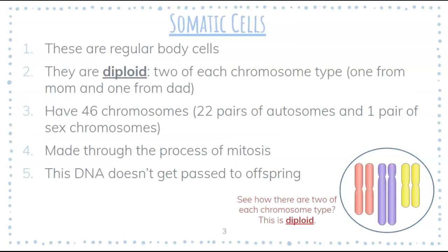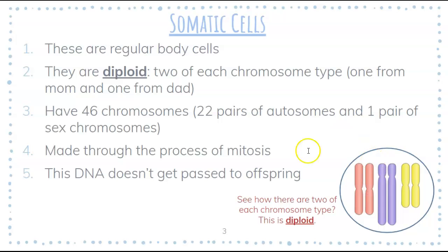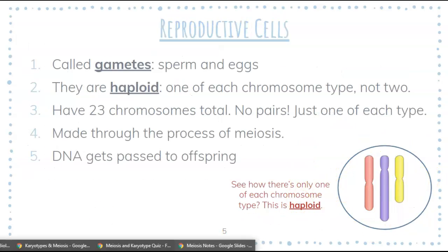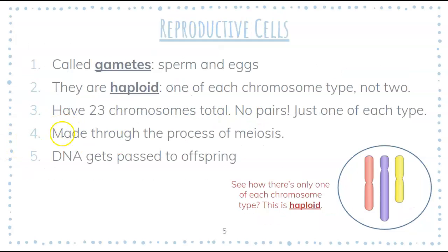Remember back to our somatic cells — they were diploid. We had two pink, two purple, and two yellow chromosomes. With our reproductive cells, they are haploid. Haploid almost sounds like half, and instead of having two of each chromosome, we just have one — one pink, one purple, and one yellow. So we have half the genetic information. In somatic cells we had 46 total chromosomes. In haploid cells, we only have 23 chromosomes and there are no pairs — just one of each type.